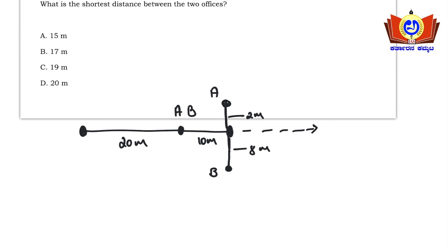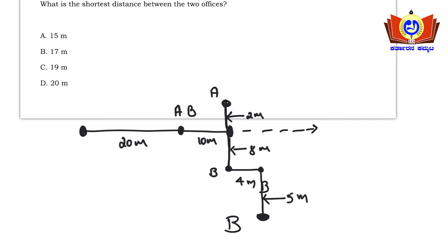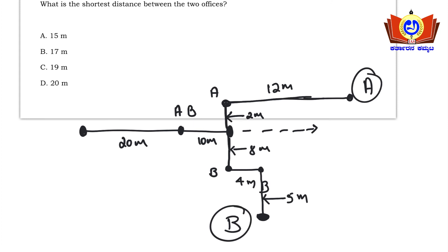B then turns left and travels 4 meters. B again turns left and travels 4 meters, followed by 5 meters to his right — reaching his office. A turns right and travels 12 meters to reach his office. So we now have both office positions plotted.